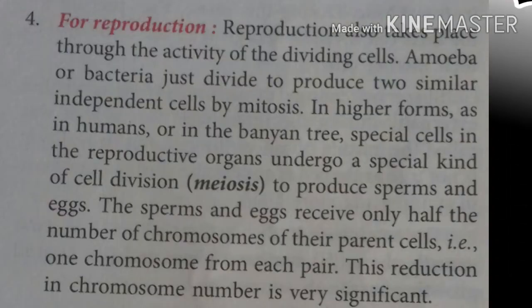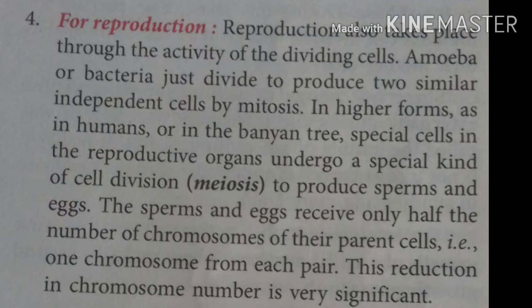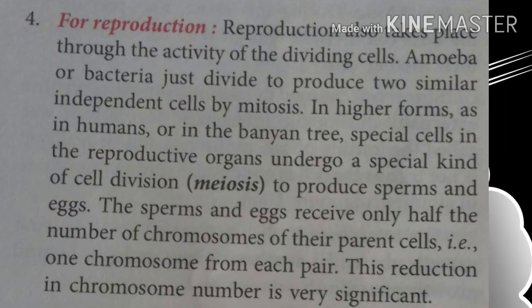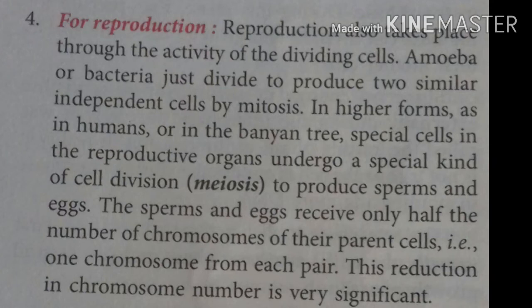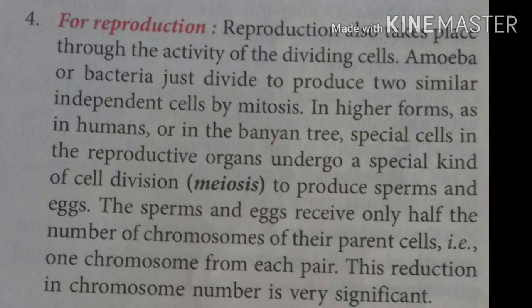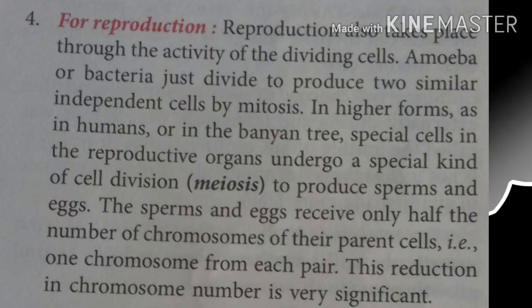Mitosis is cell division which occurs in somatic body cells, and growth occurs in the body. These cells are not passed to the next generation. In plants, somatic or body cells are called vegetative cells. In mitosis, two daughter cells are formed, and the chromosome number of daughter cells is the same as that of the parent cells. If the parent cell has 10 chromosomes, the daughter cells also have 10 chromosomes.